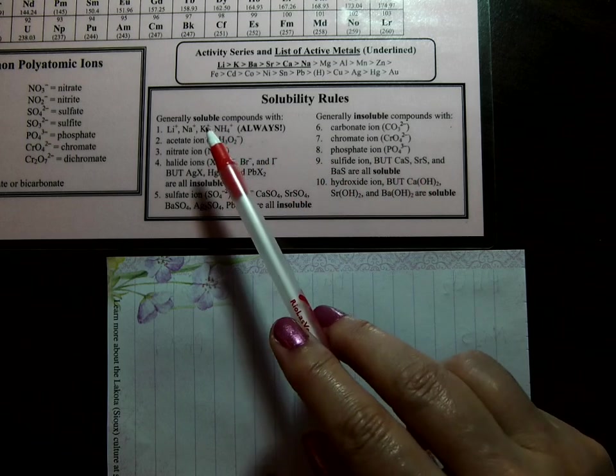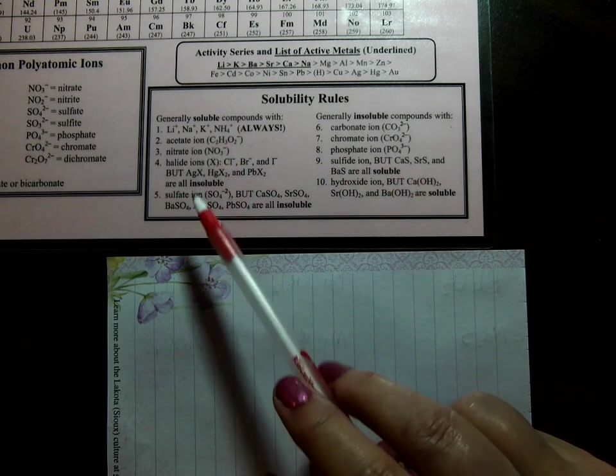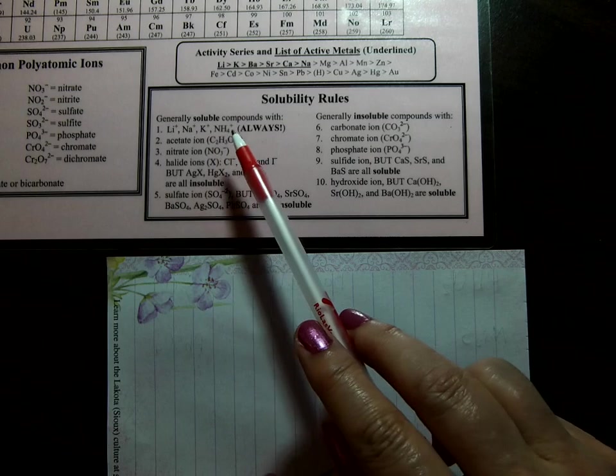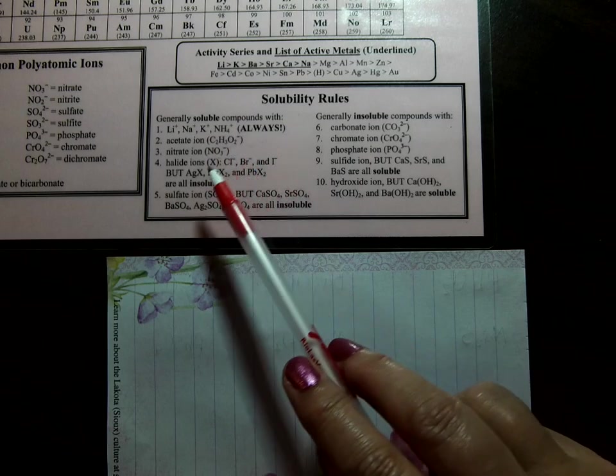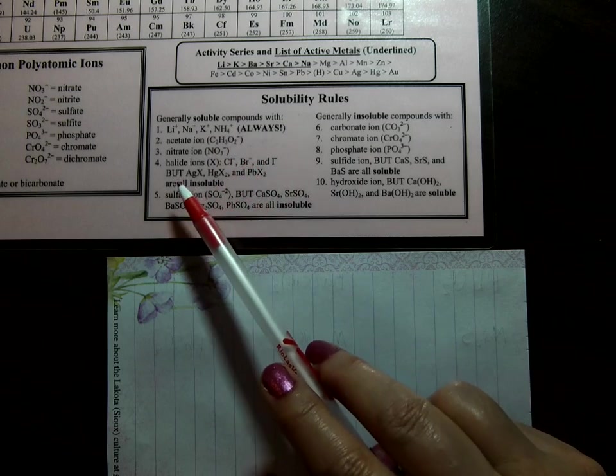The rules start with number 1, 2, 3, 4, 5, which are generally soluble compounds, unless there's an exception, which is the word but.